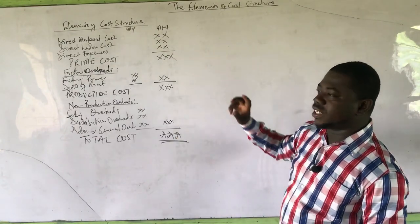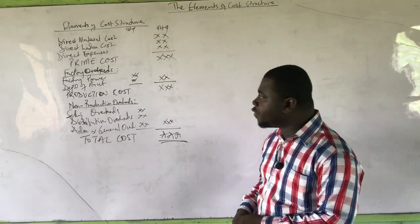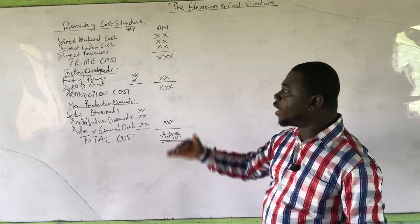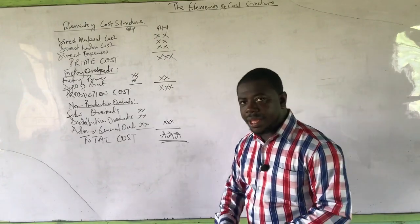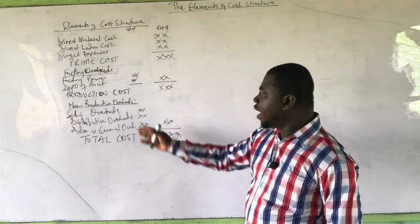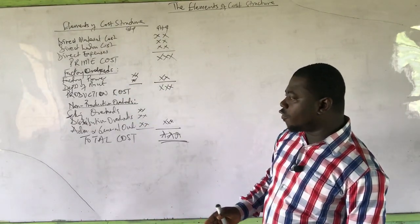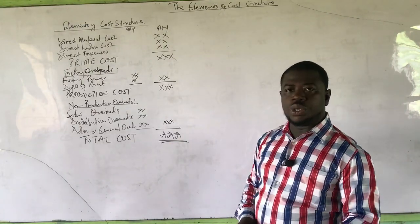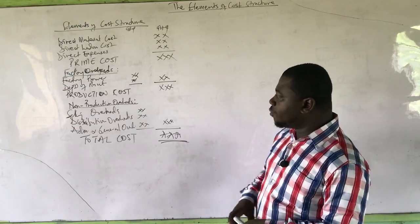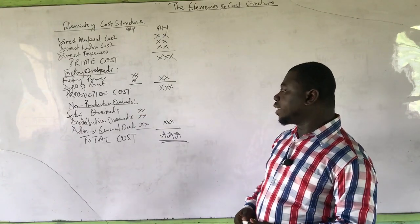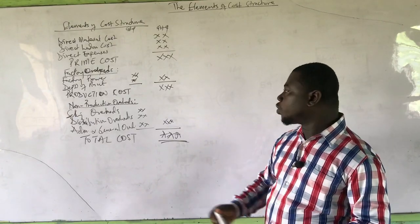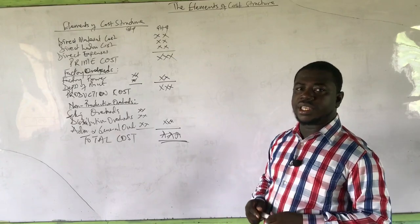We are going to use this structure especially for most costing topics. What I want you to do is master the concept — understand how we accumulate cost in steps. We first find our prime cost, then add factory overheads to get the production cost, and when we add the non-production or non-factory overheads, we get the total cost. If asked the difference between production cost and total cost, total cost includes non-factory overheads; production cost does not.